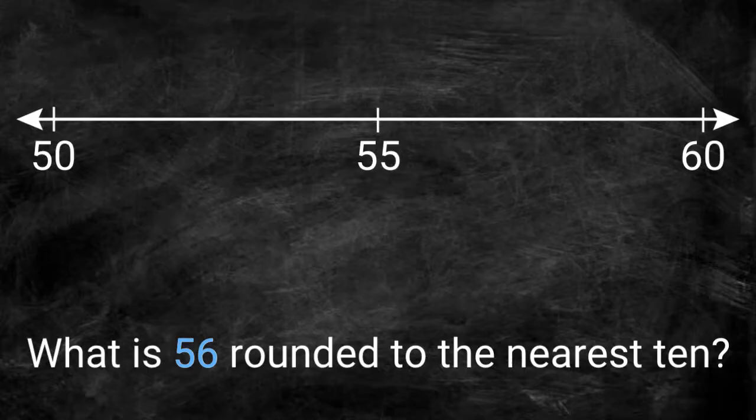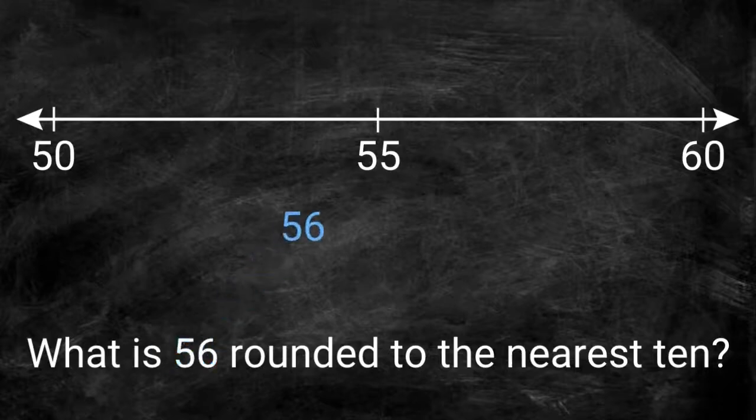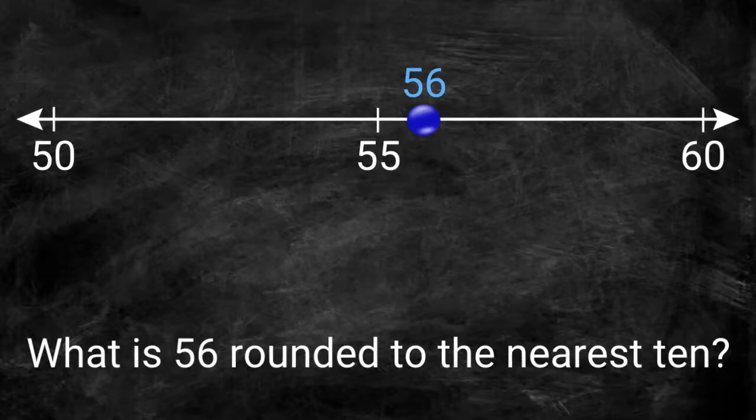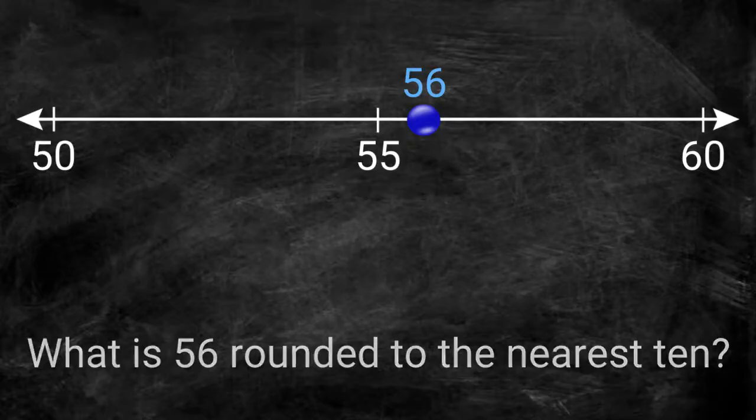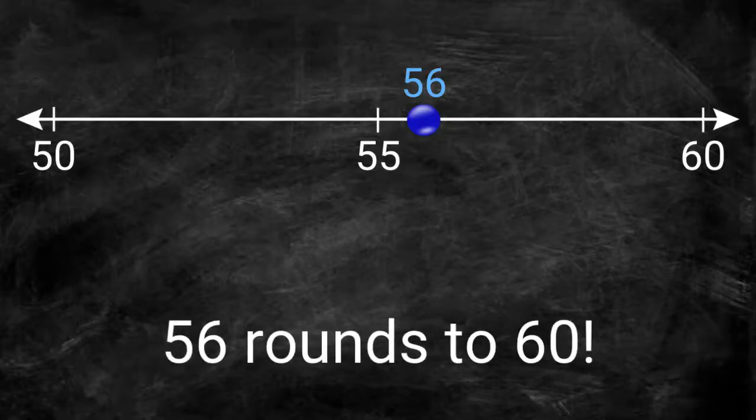Do you know where 56 is located on this number line? 56 is located one space after the 55. We can see now that 56 is closer to 60 than 50. This means that 56 rounded to the nearest 10 is 60.